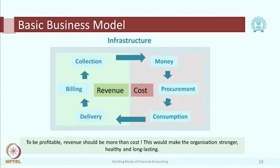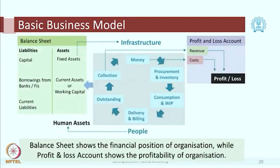The money cycle starts with money, then procurement and so on, and goes back to money. At the stage of procurement and consumption, the costs are incurred, then delivery and collection is the time you get the revenue. From this money cycle, the basic financial statements emerge. On one hand we have the P&L account — it records your revenues, it records your costs, and it compares the revenues and costs. The net result is given in the form of profit or loss.